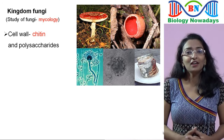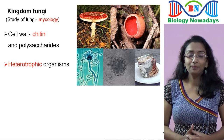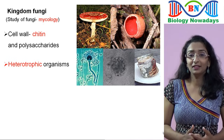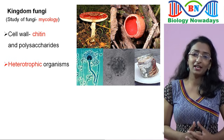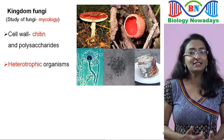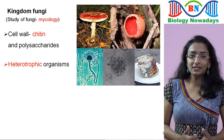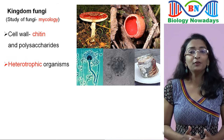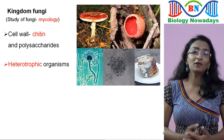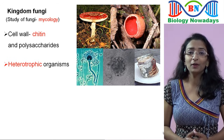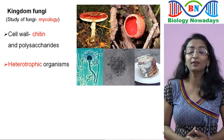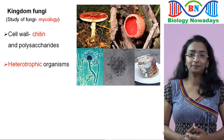Chitin is more resistant to microbial attack than cellulose found in the cell walls of green plants. Fungi are heterotrophic organisms, meaning they cannot prepare their own food but depend on other organisms for food. The presence of chitin in the cell walls and the heterotrophic mode of nutrition are the two important criteria by which fungi were grouped into a separate kingdom and not together with Kingdom Plantae.